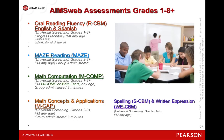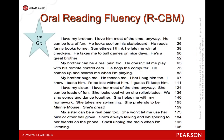AIMSweb has conducted extensive research to create passages in oral reading fluency that are of very similar difficulty between grade levels. A difference between AIMSweb and DIBELS is that in AIMSweb, we have three probes exclusively reserved for benchmark, and the same three probes are used fall, winter, and spring.